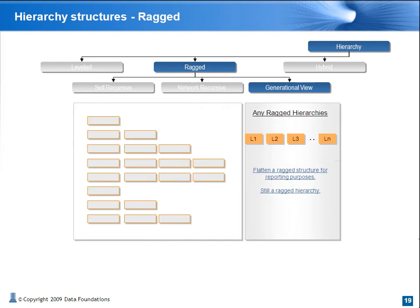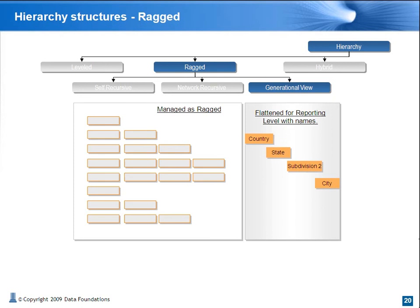Reporting and BI tools work best with flat structures. Generational hierarchy is a flattened view of the ragged hierarchy. It's good for reporting, but by no means a structure that should be used for managing hierarchies. Generational view levels may or may not have logical names. Another option for the geography hierarchy we saw earlier is to manage it as a ragged hierarchy, but report it as a flattened structure with each level given a name.